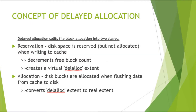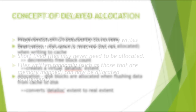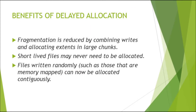Delayed allocation splits file block allocation into two stages. First, reservation: disk space is reserved when writing to cache, a virtual delayed extent is created. Second, allocation: disk blocks are allocated when flushing data from cache to disk, converting the virtual extent to a real extent. Benefits include reduced fragmentation by combining writes, short-lived files may never need allocation, and randomly written files can be allocated contiguously.